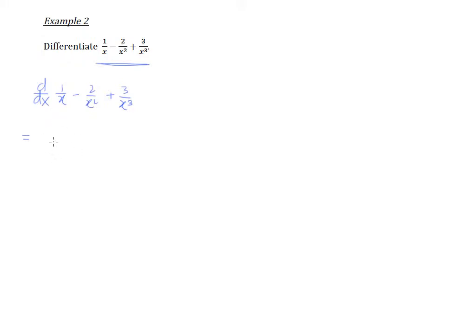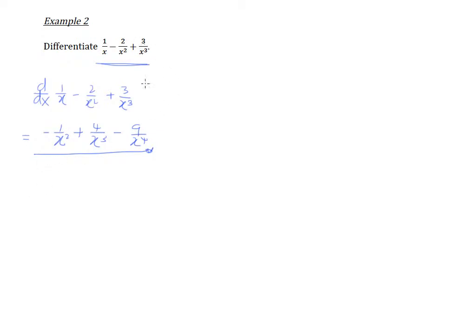What I want you to be able to do at the end of this video is to differentiate this in one step, in a very quick manner, and get this answer of negative one over x squared, plus four over x cubed, and minus nine over x to the power four. So let us discuss first of all how we really differentiate this in the first place.